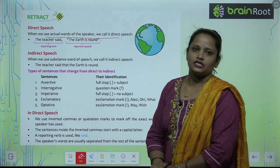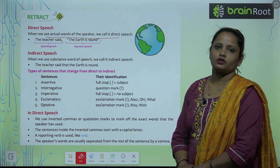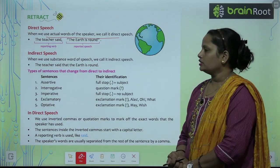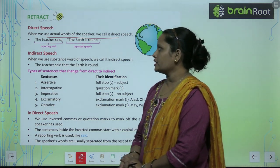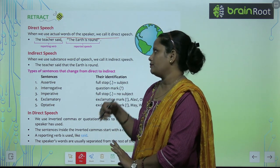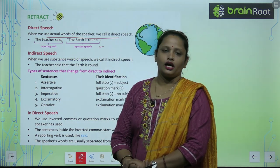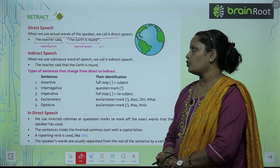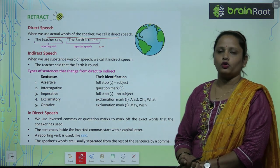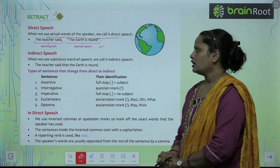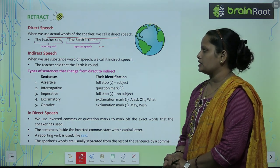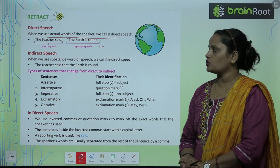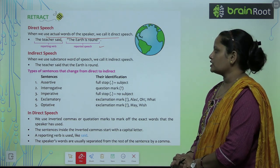Direct Speech is when we use the actual words of the speaker — we call it Direct Speech. For example, the teacher said 'the earth is round.' Here, 'the teacher said' is the reporting verb and whatever dialogue was said is the reported speech. Indirect Speech is when we use the substance words of speech — we call it Indirect Speech.